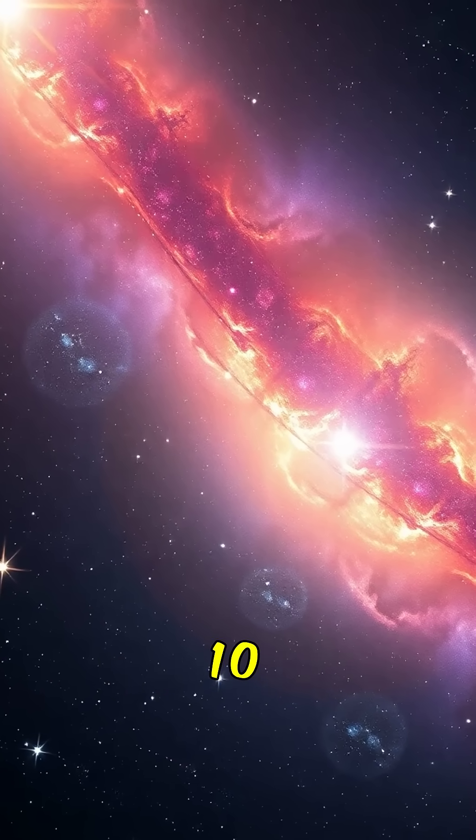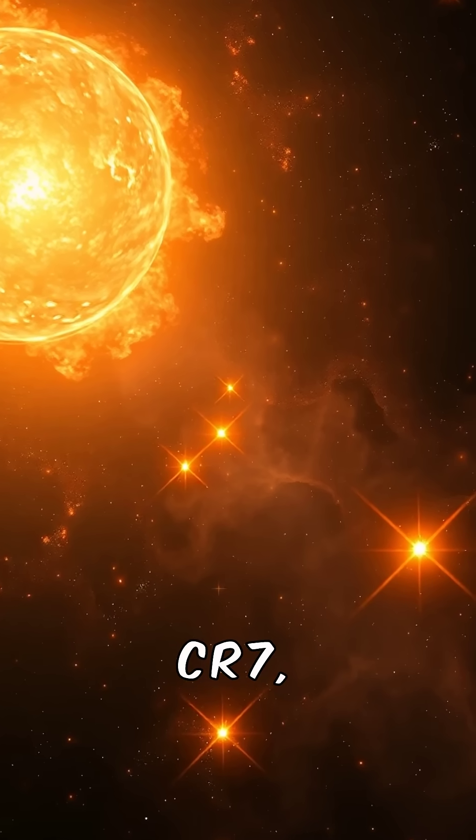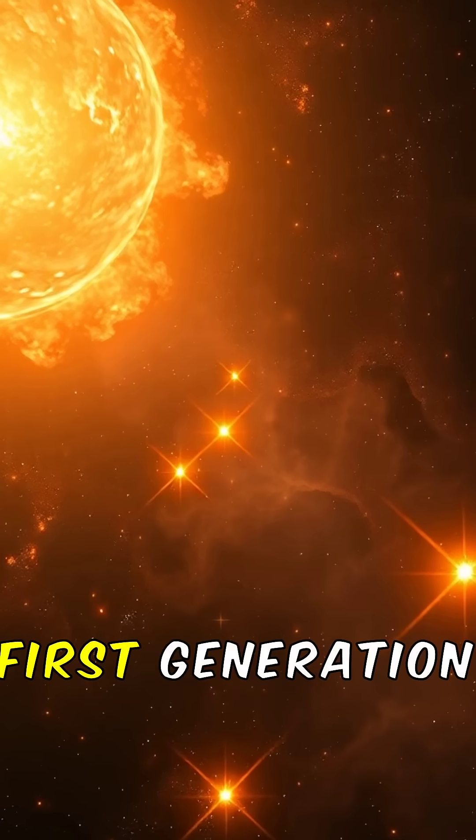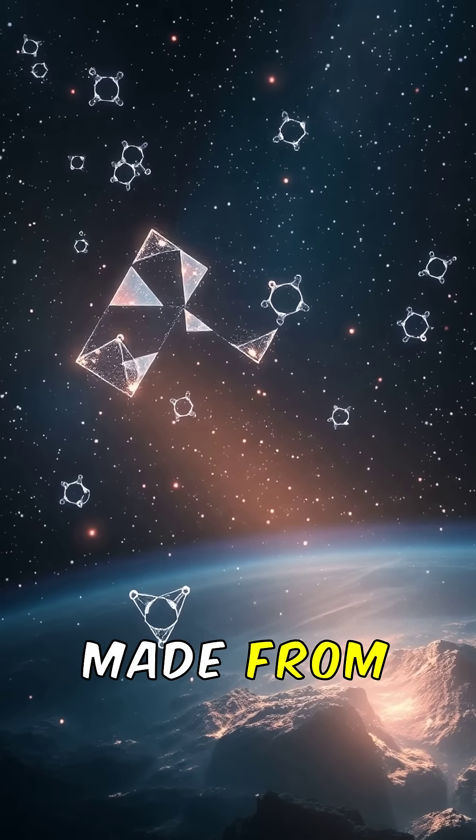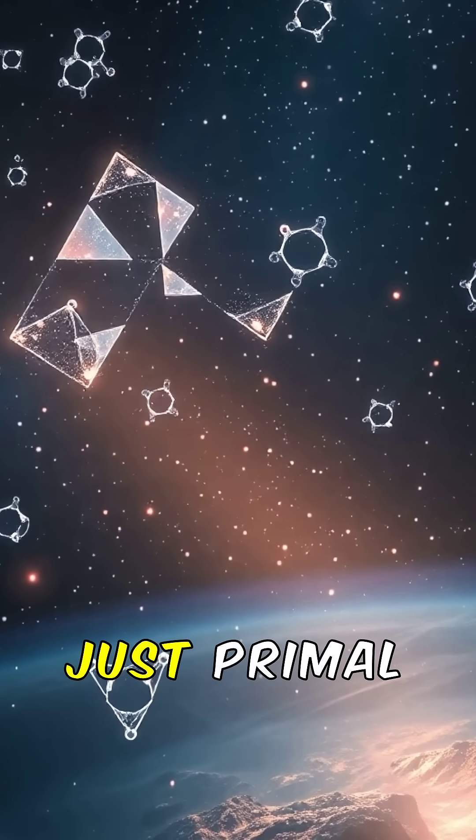There's a galaxy that formed its stars ten times faster than the Milky Way ever did. Called CR7, it might contain the universe's first-generation stars, made from pure hydrogen and helium. No metals, no dust, just primal light.